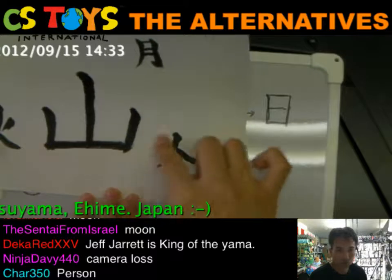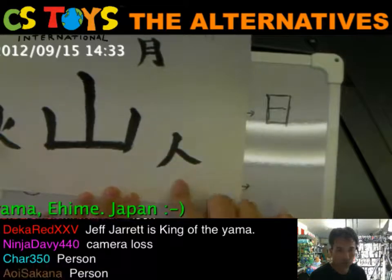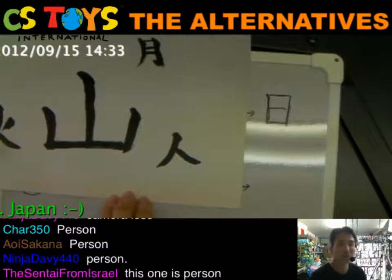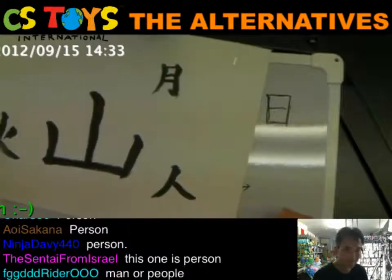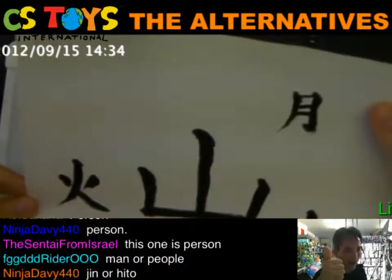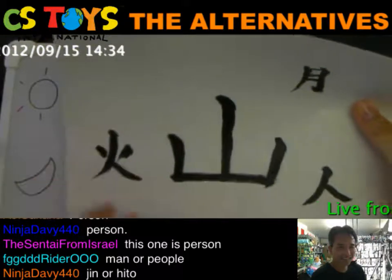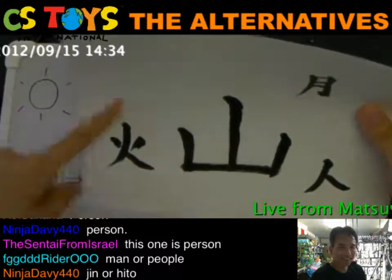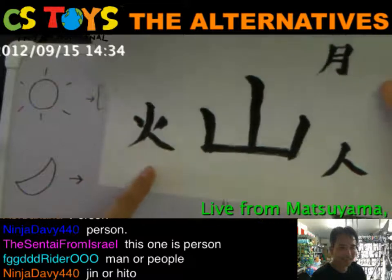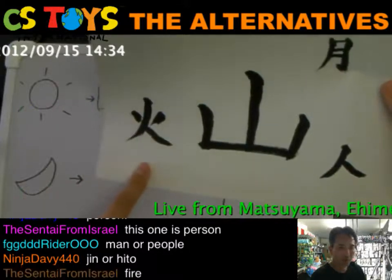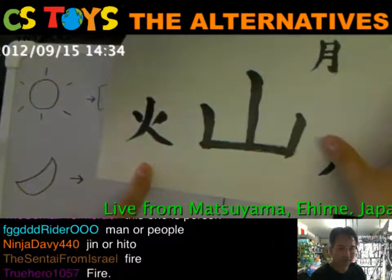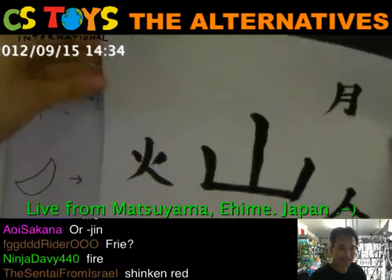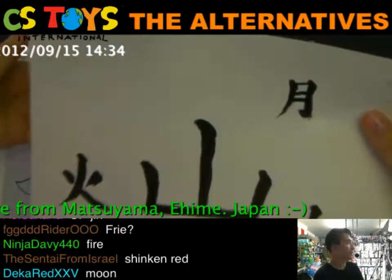Now let's look at the next one. What is the meaning of the kanji character in the center? Person. Then next is this one. Yes, this is fire! They're good.